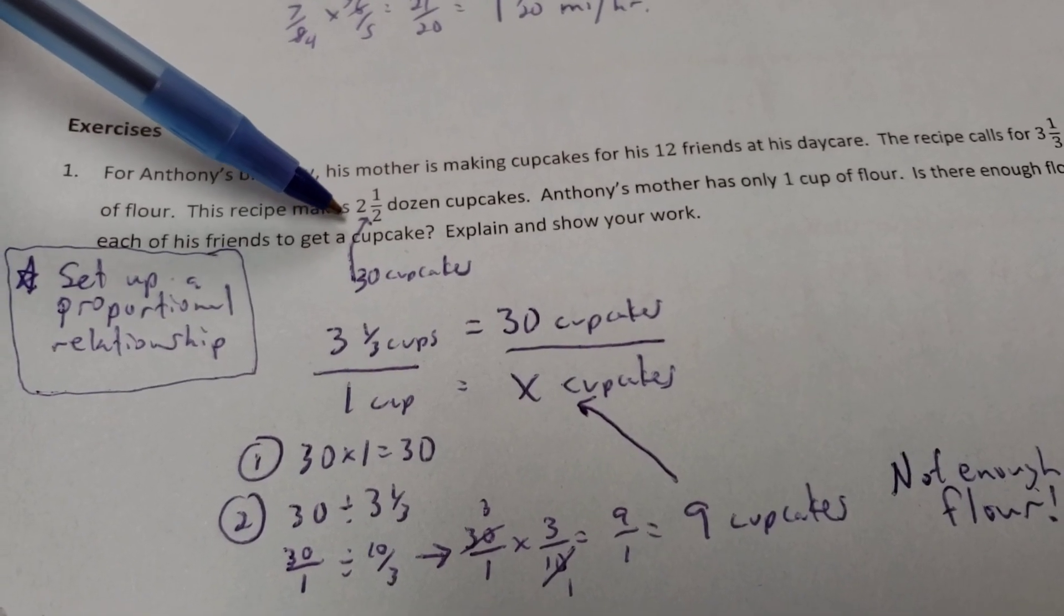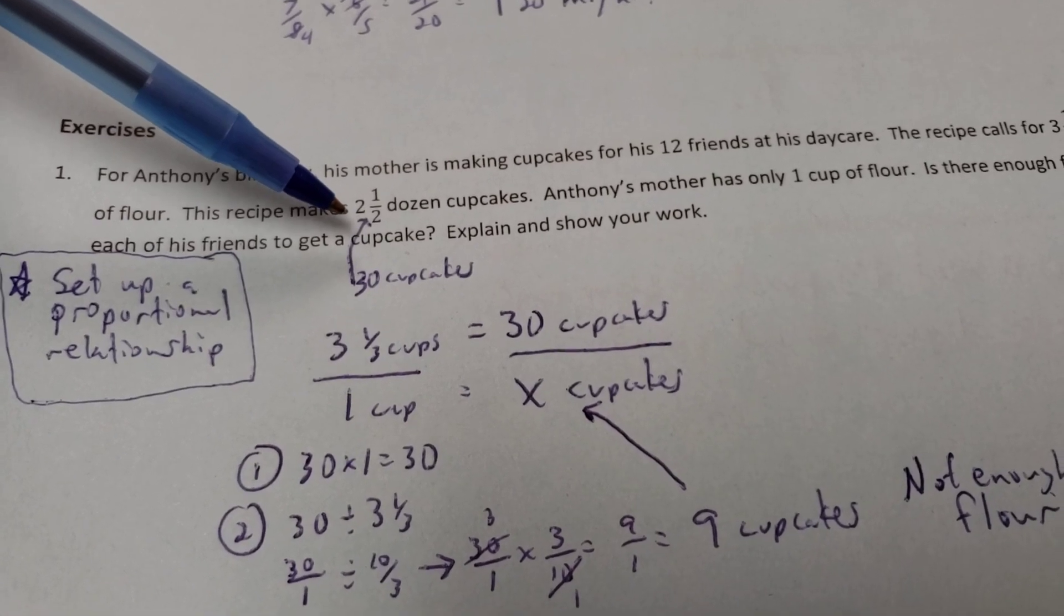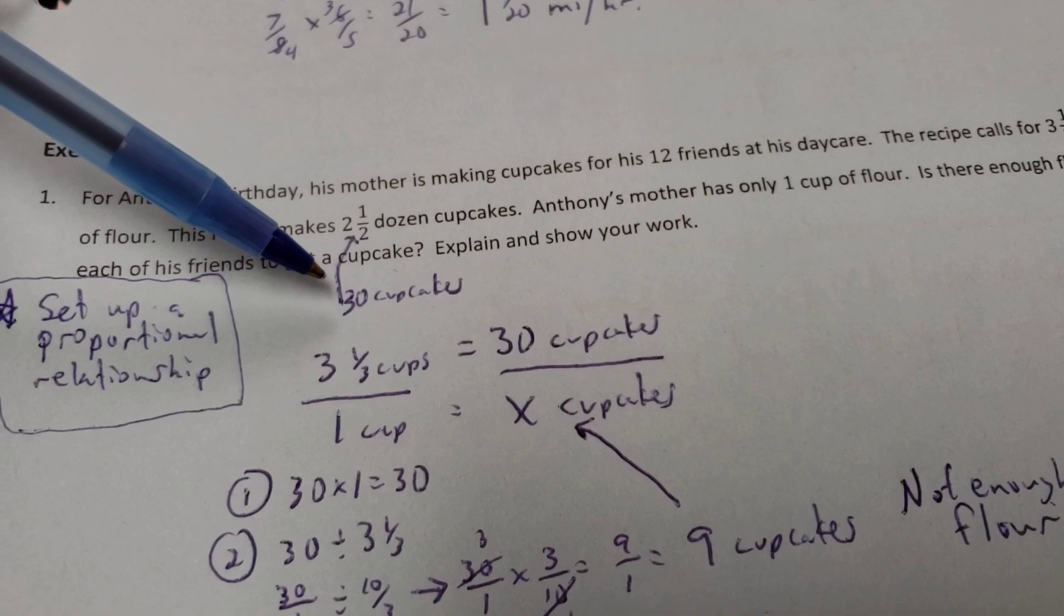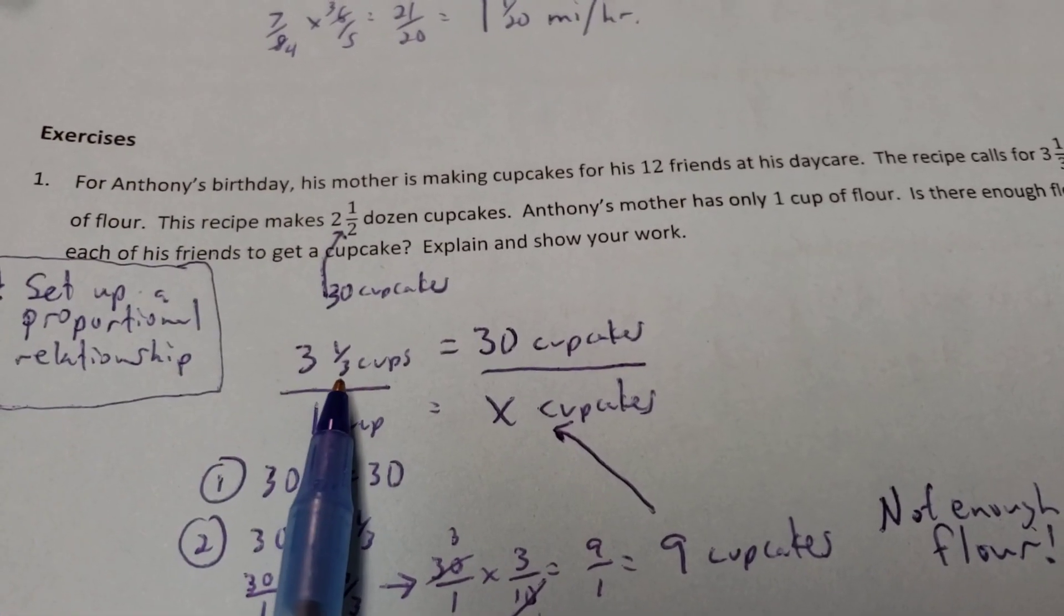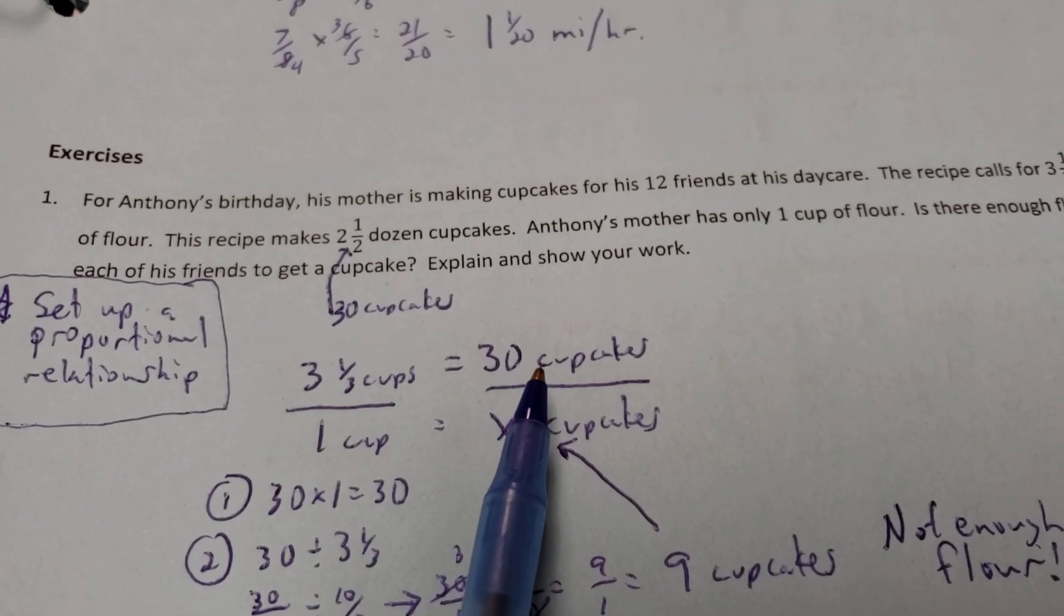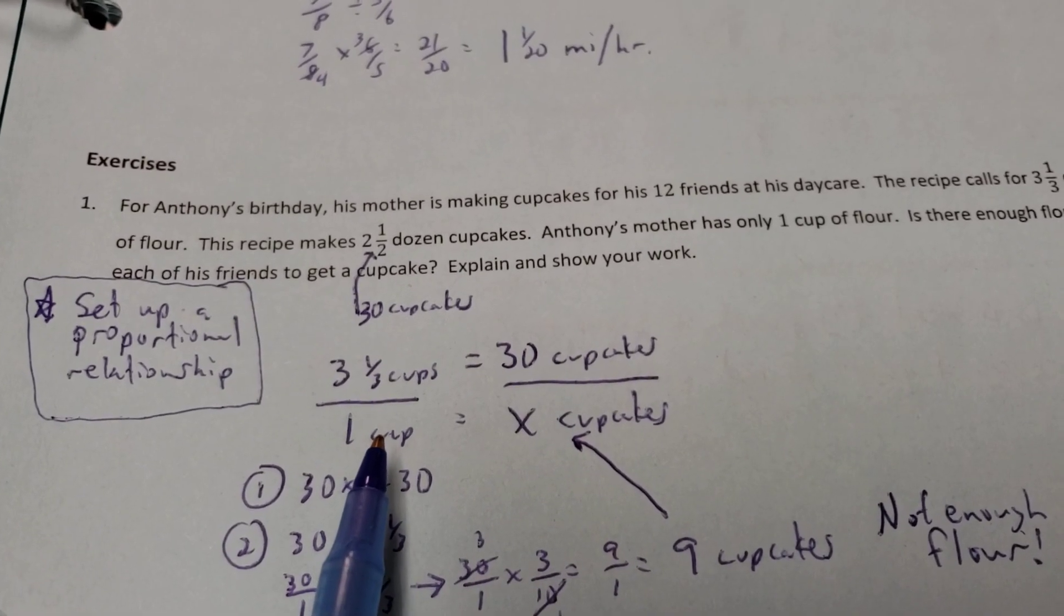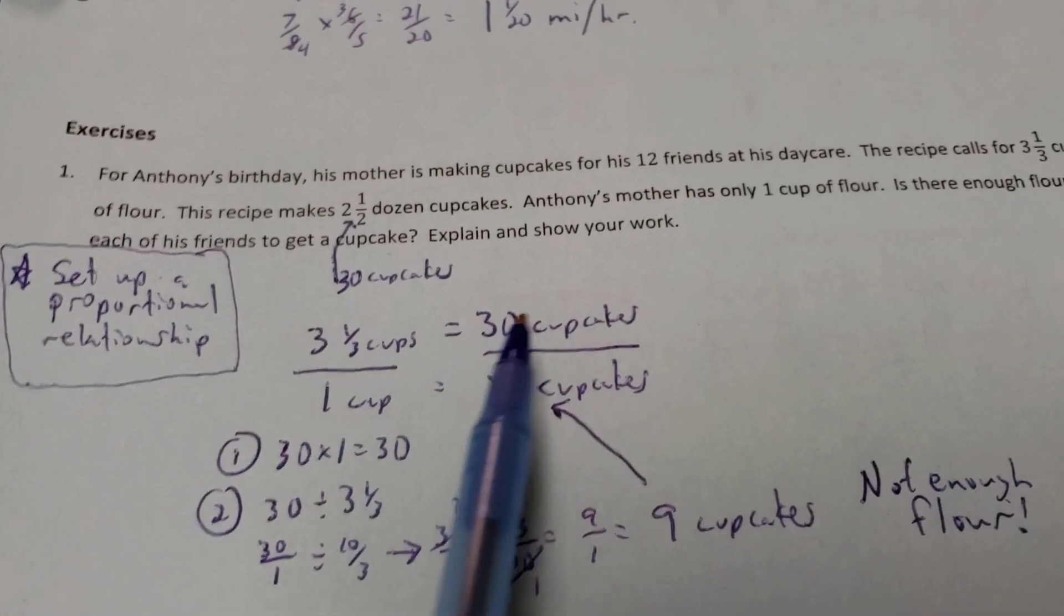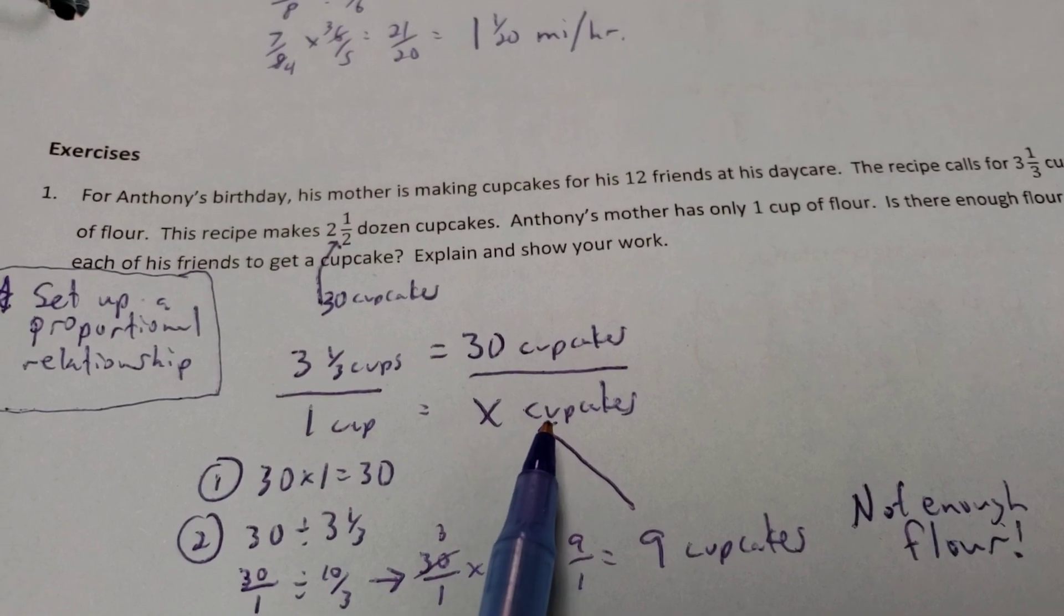Now, a dozen means 12. So, a half a dozen means 6. So, if I have 2 full dozens, 12 and 12 make 24, an extra half dozen gives me 30 cupcakes. All right? Now, the recipe said 3 and a half cups, or sorry, 3 and a 1/3 cups is equivalent to making 30 cupcakes. Well, she only has 1 cup. It's going to make a mystery amount of cupcakes. All right? So, we know the top part here is equivalent. We want to find out the equivalence of 1 cup and how many cupcakes it makes.